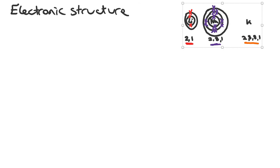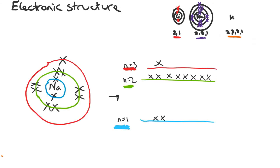We are now going to look at building on this and also looking at why fireworks give out certain colours when we see them around Halloween. So we are now going to introduce a new concept called an energy level. Previously looking at sodium, the electronic structure is shown here. In another video you will see how we cannot predict the exact location and momentum of an electron at any one given point in time. What we can know is that they occupy a fixed energy, or an energy level. So the old thing that we called a shell, we are now going to call it an energy level.